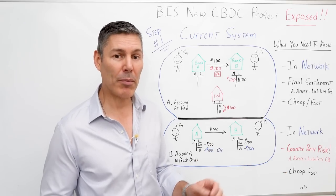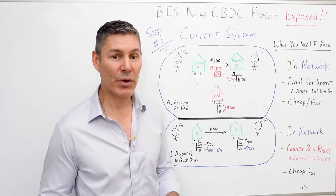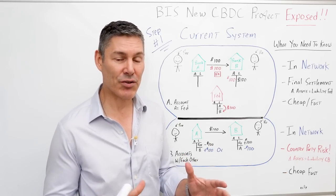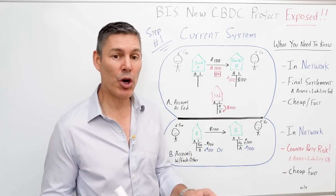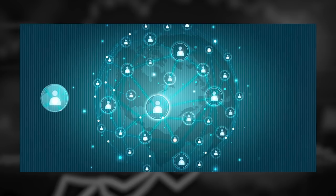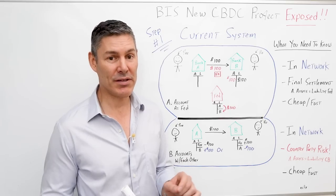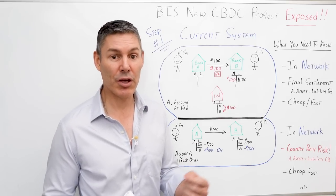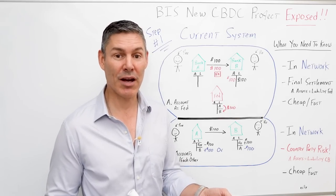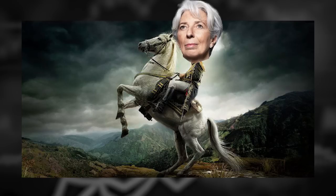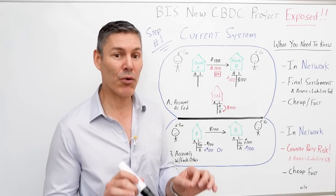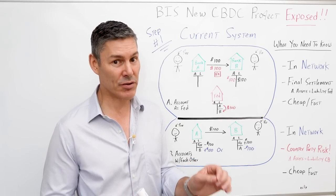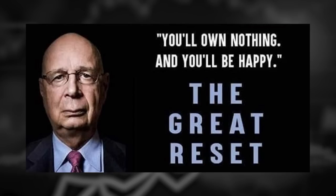The problems start to arise when these entities try to transact with one another and they aren't in the same network. And this is when the central planners and the authoritarians come in on their white horse and say they have this CBDC solution for you. But what people need to realize is they're doing a deal with the devil.